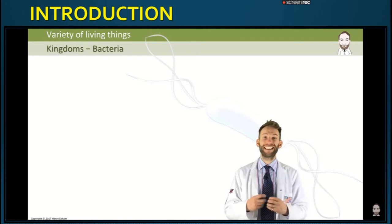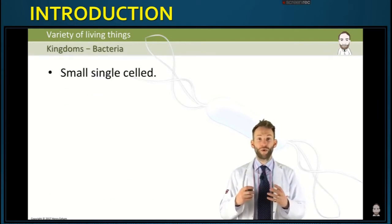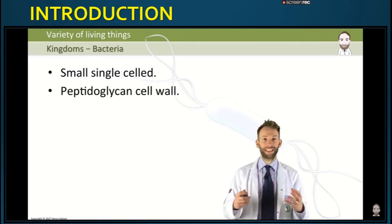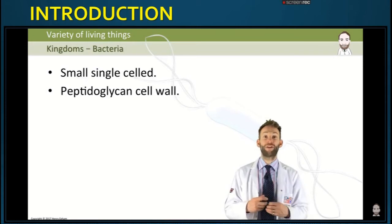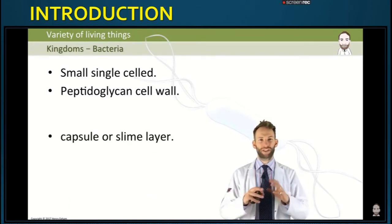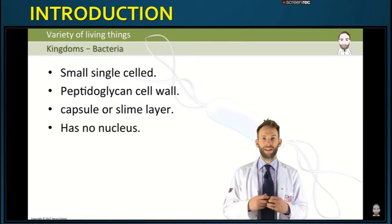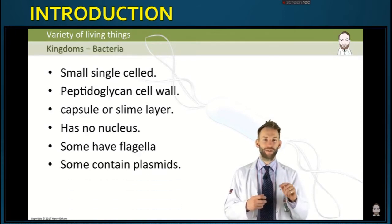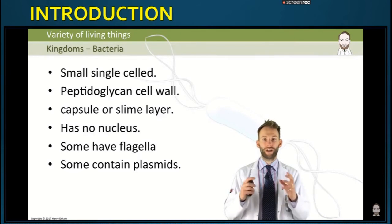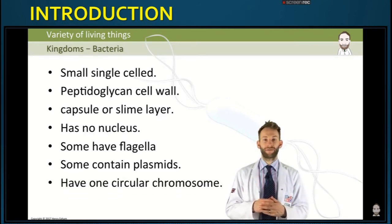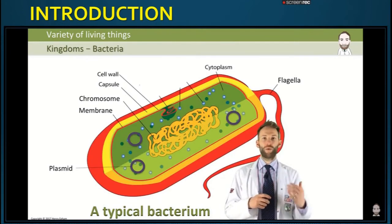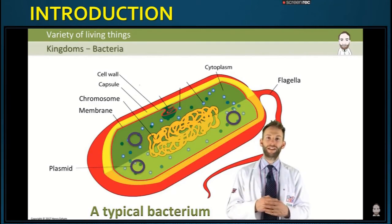Bacteria are fundamentally different from the other four kingdoms. They are all single-celled organisms, and these cells are much smaller than the others. They do have a cell wall, but it is made of peptidoglycan — completely different from a fungal or plant cell wall. Some have a capsule or slime layer for protection. They don't have a nucleus at all. Some have flagella — little tails that allow them to swim. They also contain plasmids, small singular loops of DNA separate from their main circular chromosome. Some bacteria can actually photosynthesize.